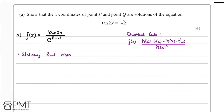We know f(x) is four sine 2x over e to the power of root 2x minus 1, and P and Q are turning points — maxima and minima. We know these are called stationary points. We will have a stationary point when the derivative f'(x) is equal to zero.